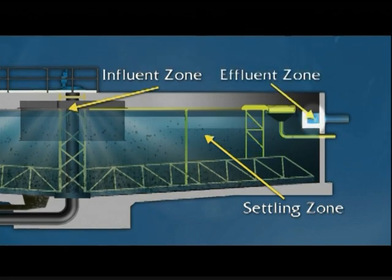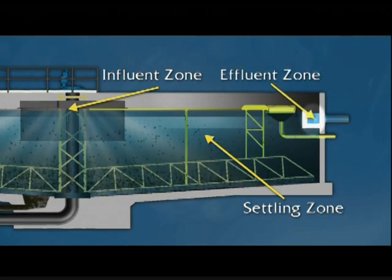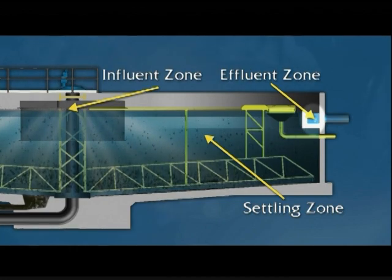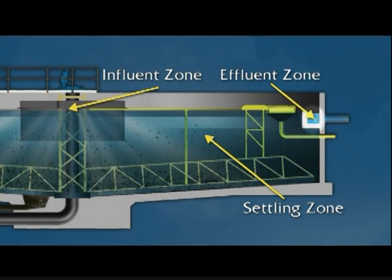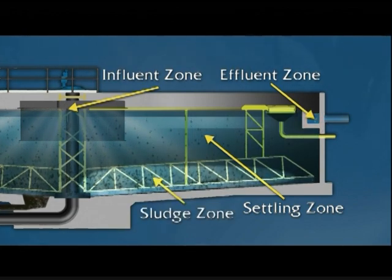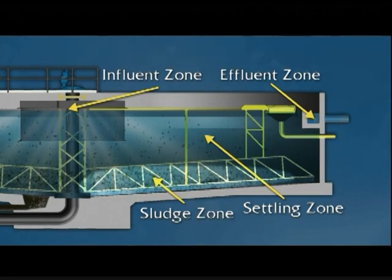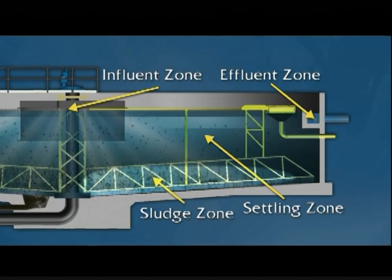Three, the effluent zone provides a smooth transition from the settling zone to the effluent flow area. It's important that currents don't stir up any settled solids and carry them into this area. Four, the final zone is the sludge zone, where settled solids are separated from other particles in the settling zone.